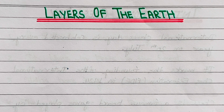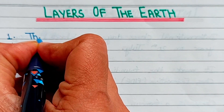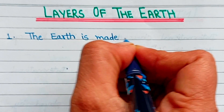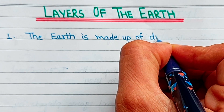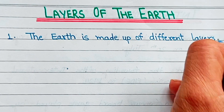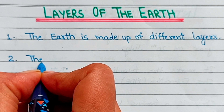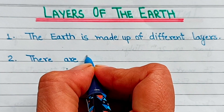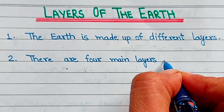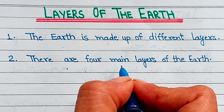Hello friends, welcome back to my channel. Today we learn 10 lines on layers of the earth. The earth is made up of different layers. There are four main layers of the earth.